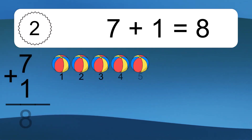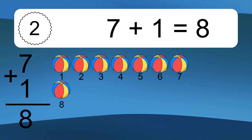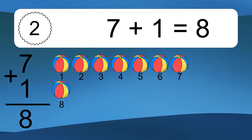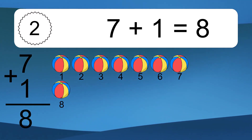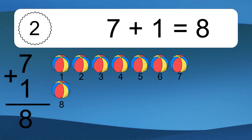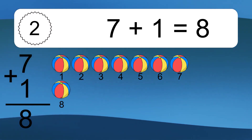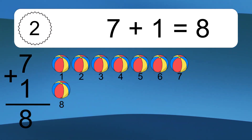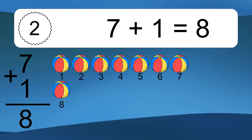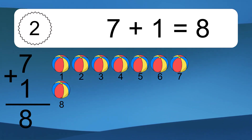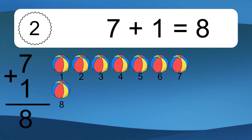7 plus 1 equals 8. Let's count it. 1, 2, 3, 4, 5, 6, 7, 8.